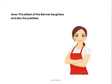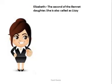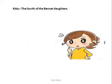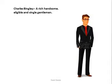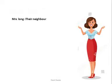Jane is the eldest of the Bennet daughters and also the prettiest. Elizabeth is the second of the Bennet daughters and is also called Lizzie. Kitty is the fourth of the Bennet daughters. Charles Bingley is a rich, handsome, eligible, and single gentleman. Mrs. Long is their neighbor.